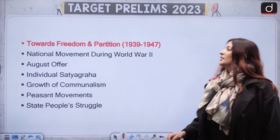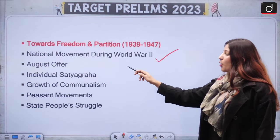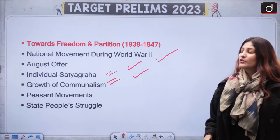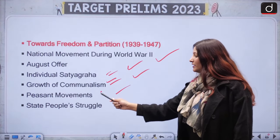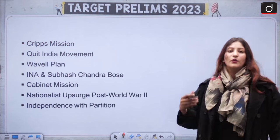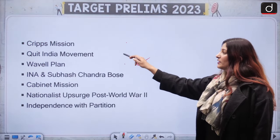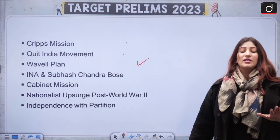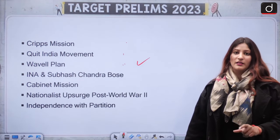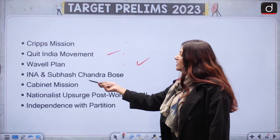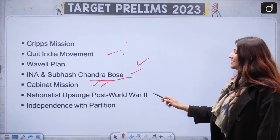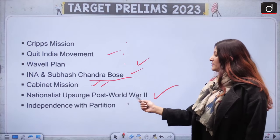Towards freedom and partition: National movement during World War II, the August Offer, individual Satyagraha — who did the first ever individual Satyagraha, growth of communalism, peasant movement, state people's struggle. Cripps Mission, Quit India Movement, Wavell Plan and its important features. INA and Subhash Chandra Bose, Cabinet Mission, Nationalist Upsurge post-World War II, and finally Independence plus Partition.